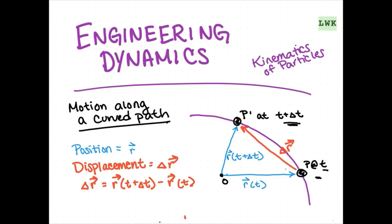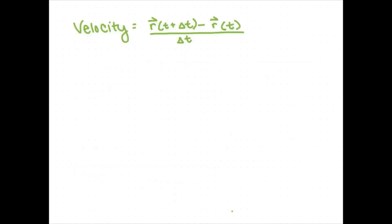Now we can describe velocity as displacement over change in time. We can write that as R of t plus delta t minus R of t divided by delta t. We can simplify it by writing it as delta R over delta t. This is the equation for average velocity.